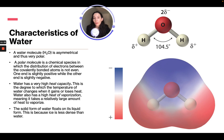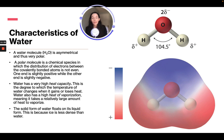A water molecule is asymmetrical and therefore very polar. A polar molecule has an uneven distribution of electrons between covalently bonded atoms — one end is positive and the other is negative. Water has a very high heat capacity, a high heat of evaporation meaning it takes large amounts of energy to vaporize, and its solid form (ice) floats on liquid water because ice is less dense than liquid water.